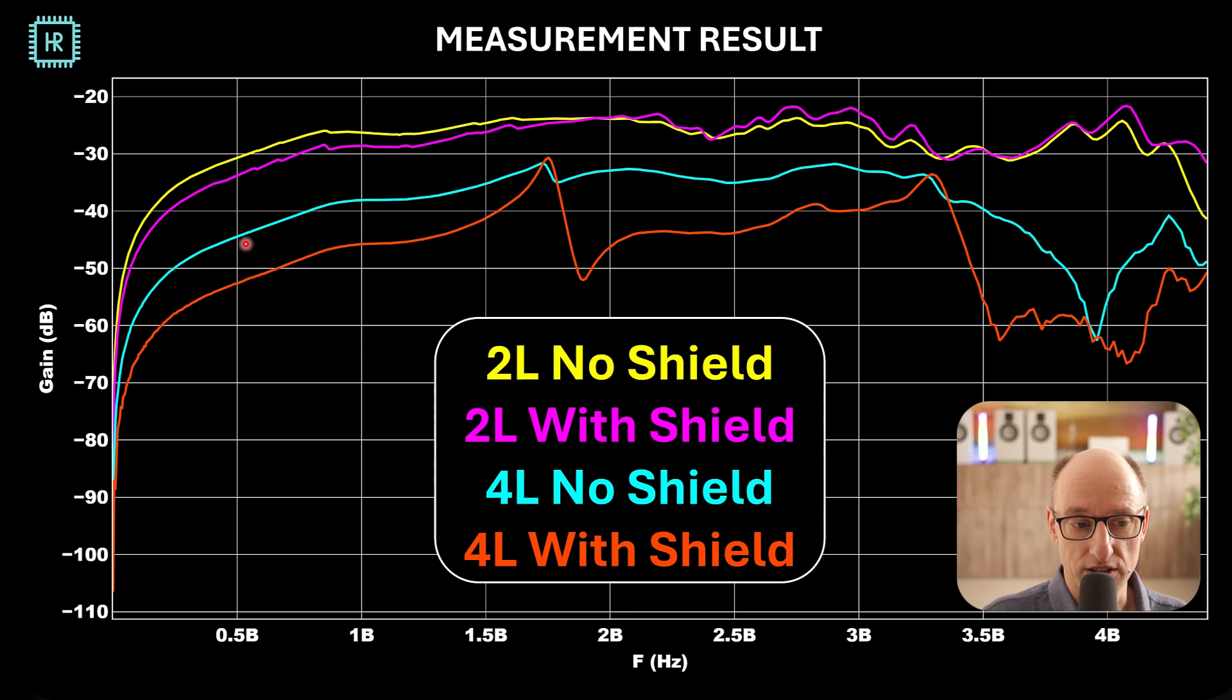And actually at higher frequencies, it seems to not even help at all. It seems to be worse. Now, the bottom two lines are the four layer. And here you do see a big impact of the shield. It really helps around 8 dBs. And you also see that in the four layer, the crosstalk is much less.